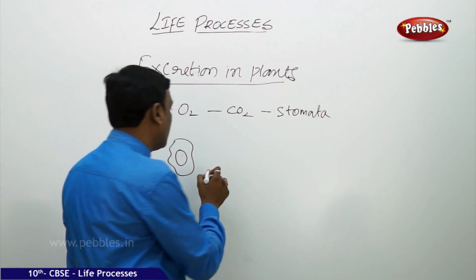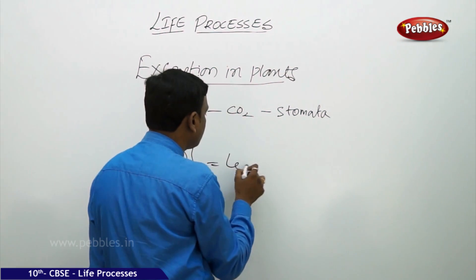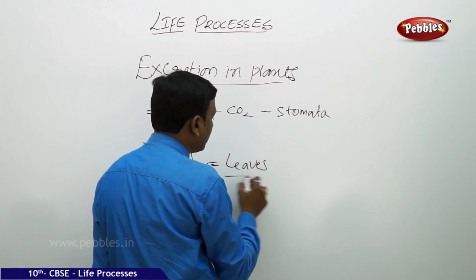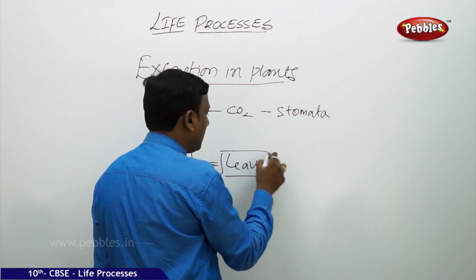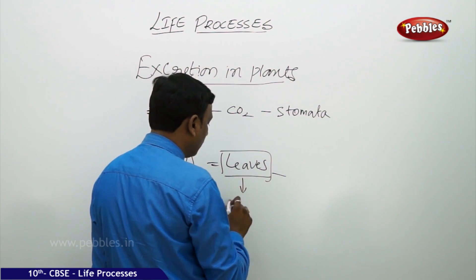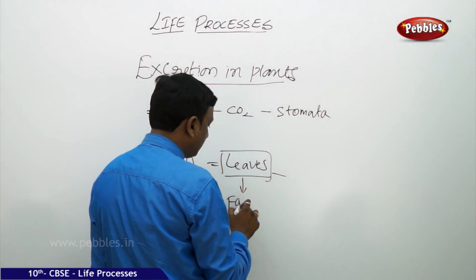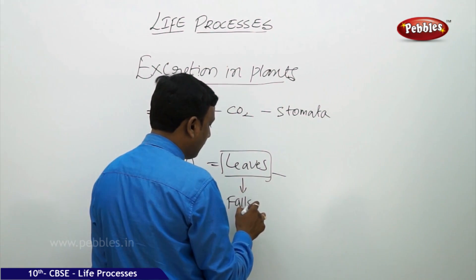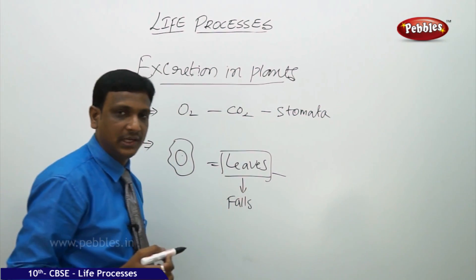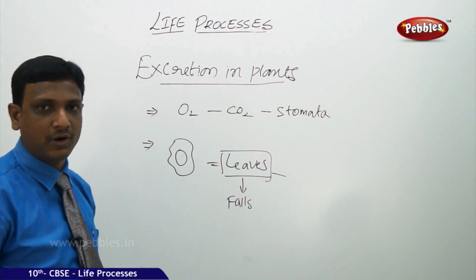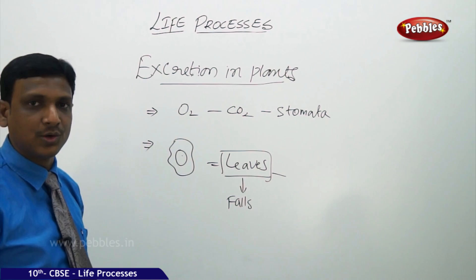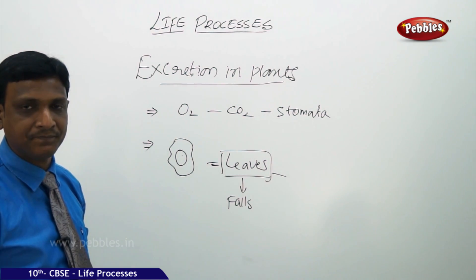Sometimes wastes are stored in the leaves. Seasonally or occasionally, the leaves fall. After completing their life, leaves become yellow and dry and fall down, so along with the leaf, the waste is sent out of the body.